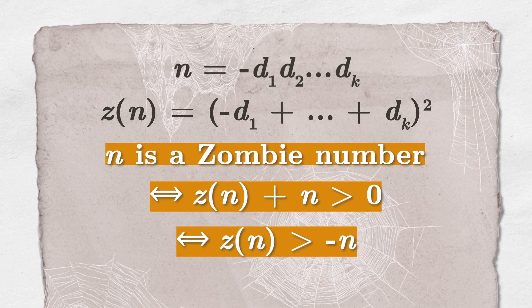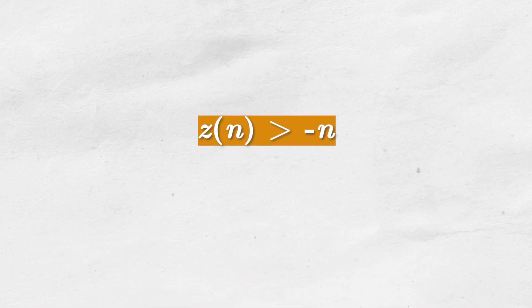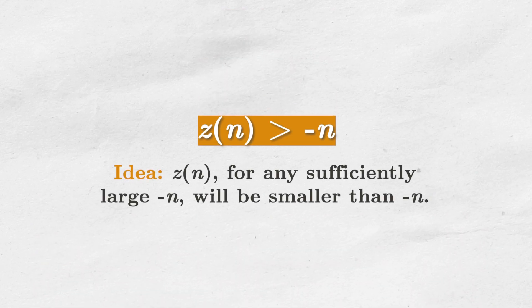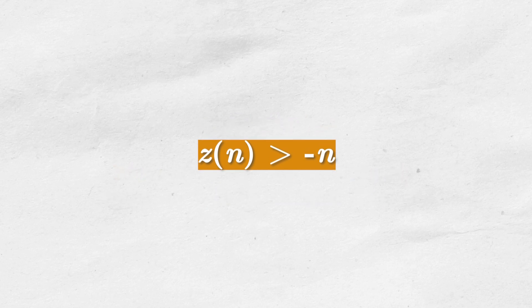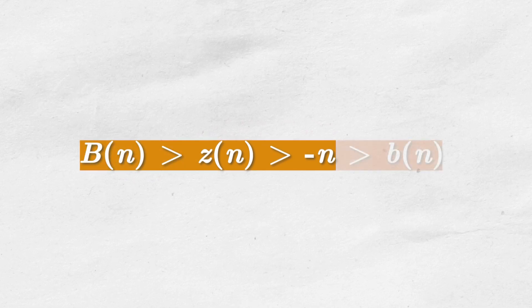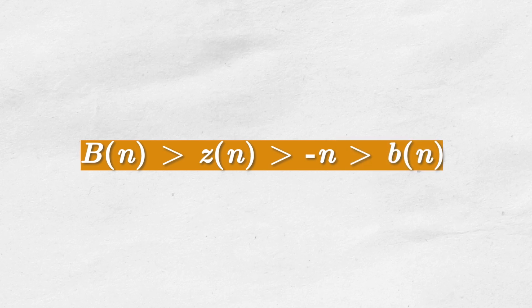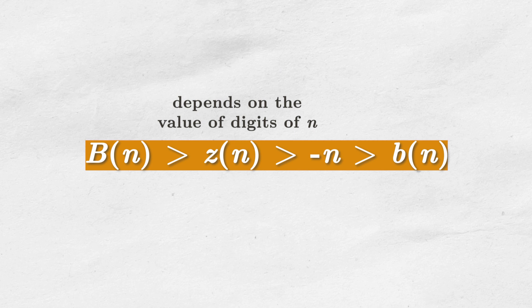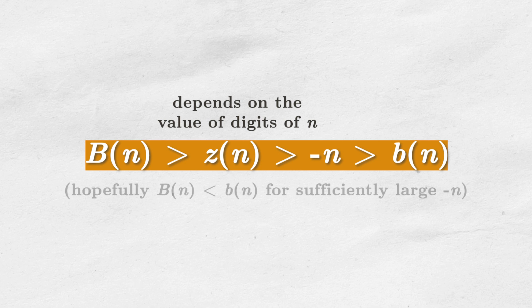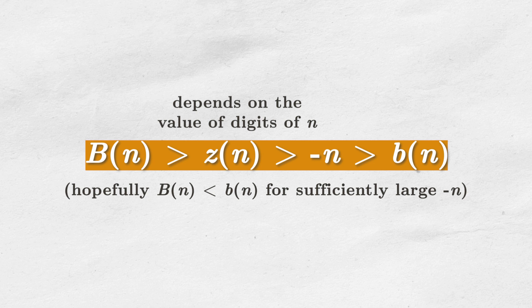The method I want to showcase is based on an idea that z of n, for sufficiently big numbers, won't be large enough to satisfy this inequality. Formally speaking, we will be looking for two boundaries. An upper bound for z of n and a lower bound for minus n. Since z of n is a function that depends on the value of digits of n, there is a big chance that the upper bound of z of n will grow much slower than the lower bound of minus n.